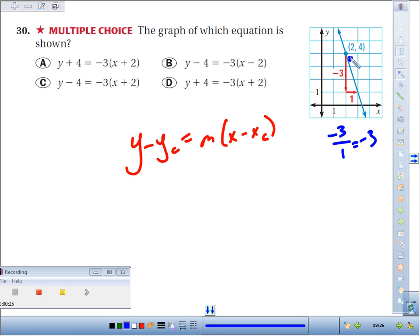Well, let's see, if I already used the point 2, 4, I'd say y minus my y-coordinate, 4, equals my slope, negative 3 times x minus my x-coordinate, 2.